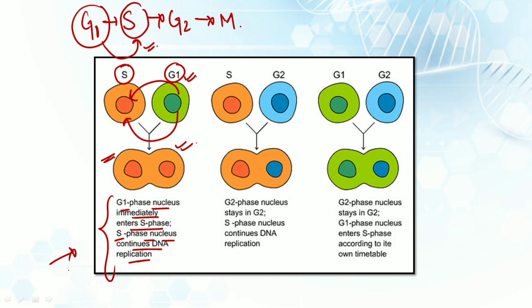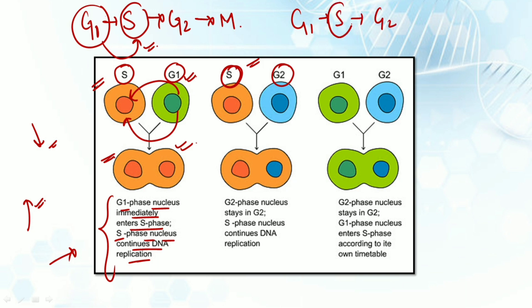The second condition was when the S phase was mixed with the G2 phase. The G2 phase has already completed its S phase, so it won't be reverting back. The G2 phase would continue to stay in G2 itself, while the S phase would continue doing its work. There is no backward reversion of the G2 phase cells.